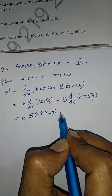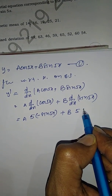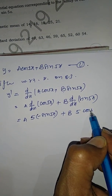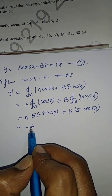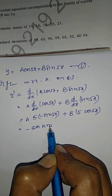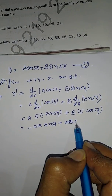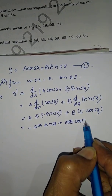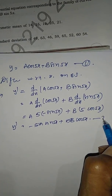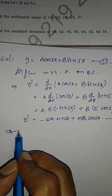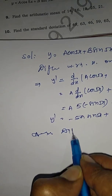d/dx of cos(5x) = −5·sin(5x) and d/dx of sin(5x) = 5·cos(5x). Therefore y' = −5a·sin(5x) + 5b·cos(5x). This is equation number two.